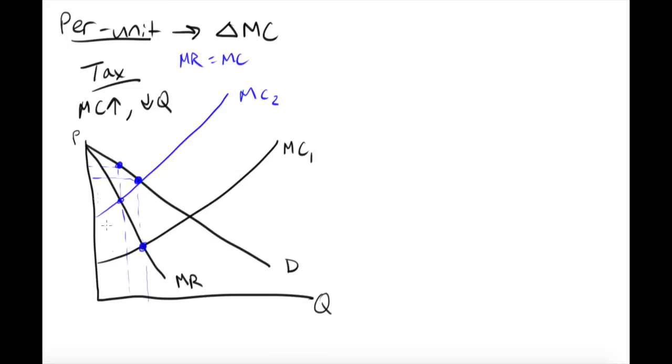And so what we can observe here is that we had a Q1 here, we had a P1 here, we have a P2 here, and we have a Q2 here. So if we just observe this shift, this is a leftward shift and an upward shift. And what we've seen here essentially is that quantity goes down and price goes up.